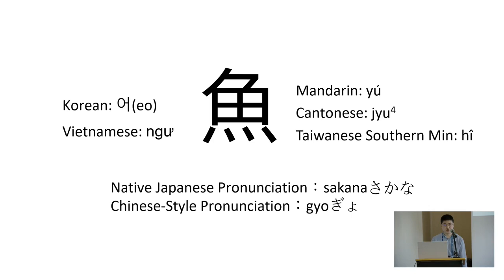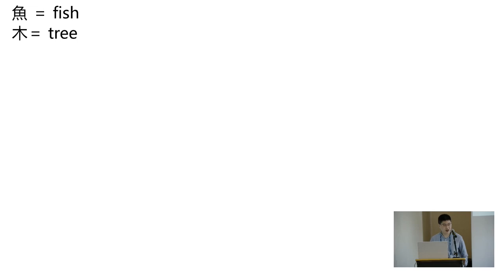In Japanese, they have different systems to pronounce the same character. It can be 'sakana' — that's kunyomi, the native Japanese pronunciation — or onyomi, the Chinese-type pronunciation, which would be 'gyo.' There's also another onyomi like 'uo ichiba' (fish market). So how to pronounce this character really depends on the context.